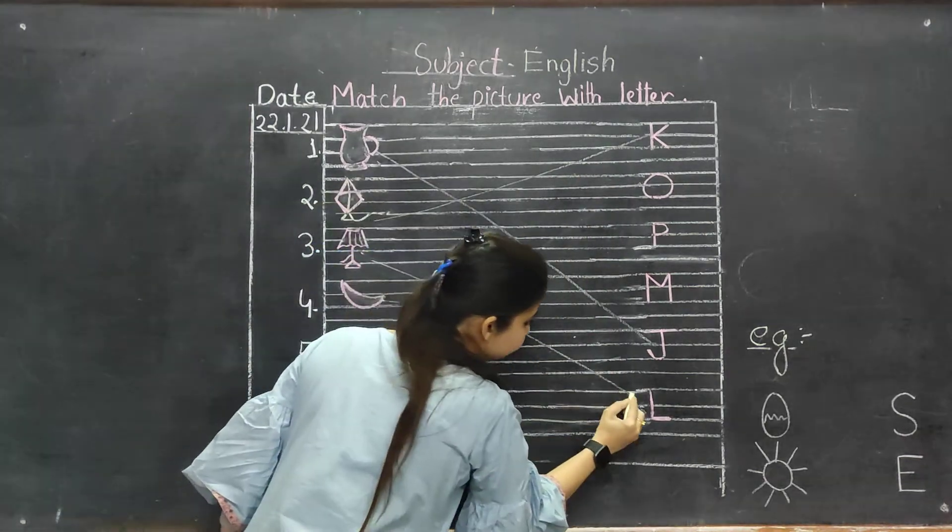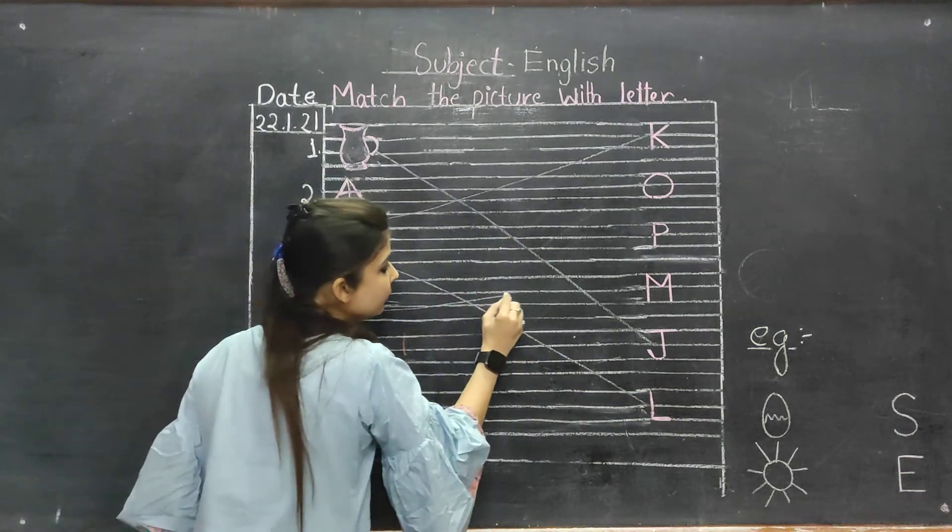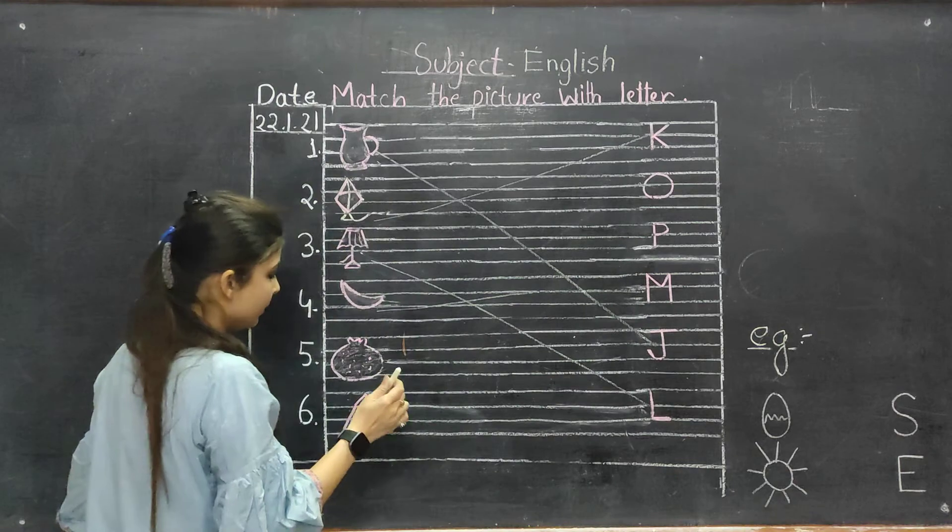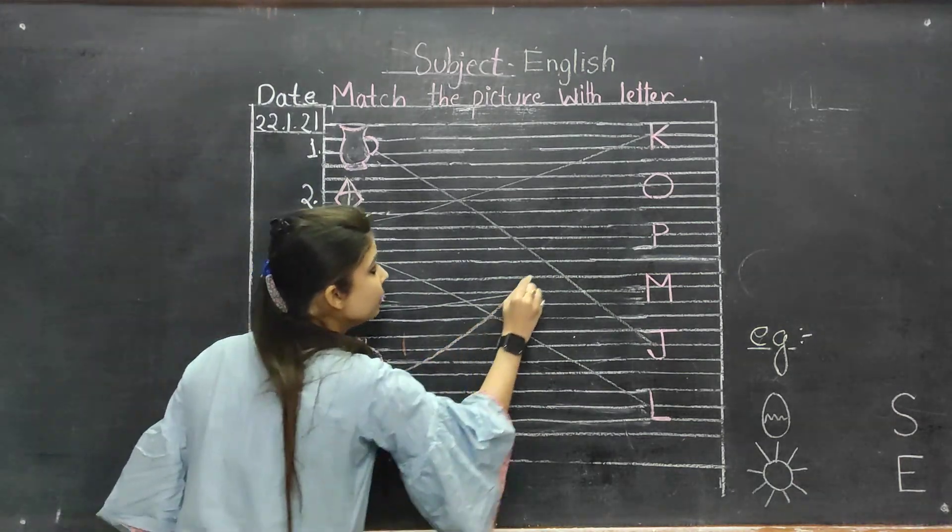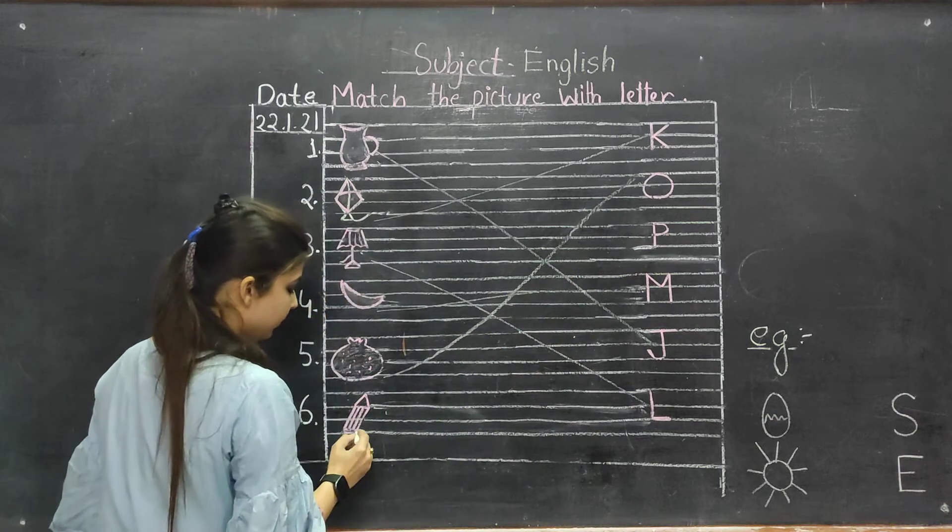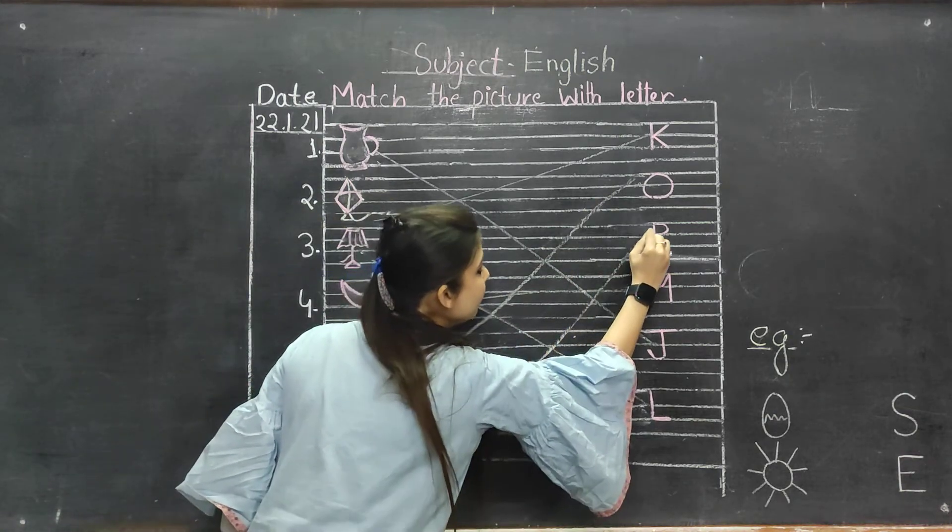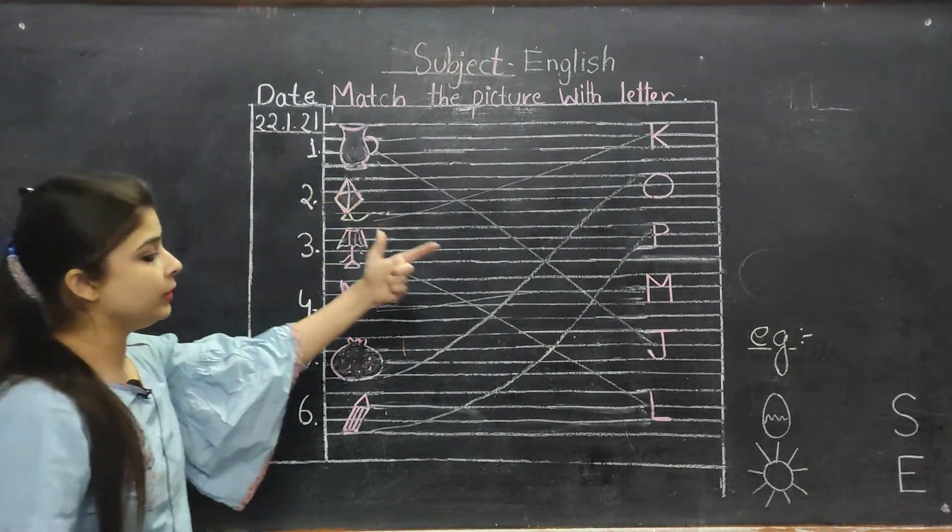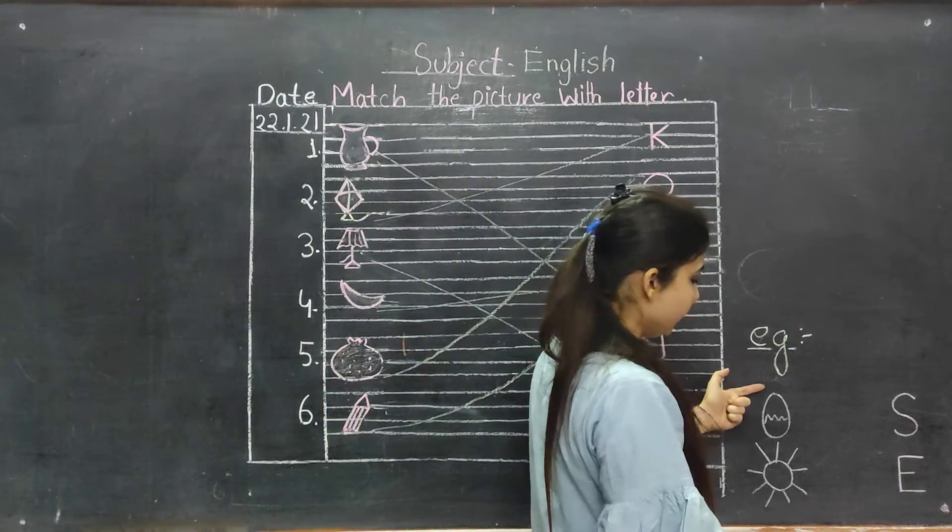This is a picture of moon, match it with M. This is orange, match it with O. This is pencil, P for pencil. So we have matched the picture with the respective alphabets. Here I have given an example.